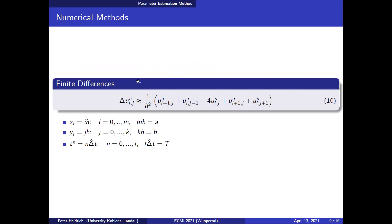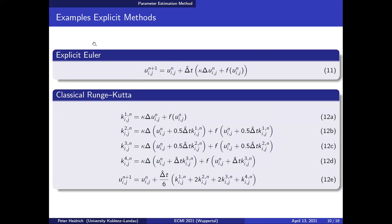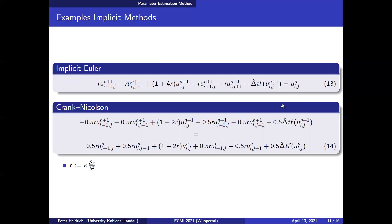For numerical methods, one approach is finite differences. We take the Laplace operator and approximate it by a five-point stencil. The trick is that we now have an ODE system to solve, which can be done by explicit methods like explicit Euler or classical Runge-Kutta, or implicit methods like the implicit Euler or Crank-Nicolson algorithm.